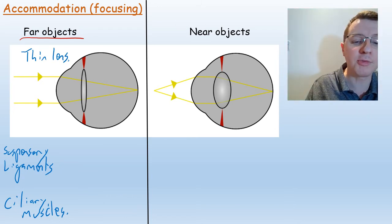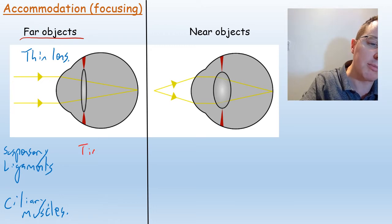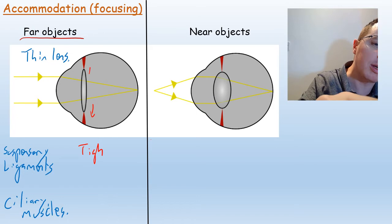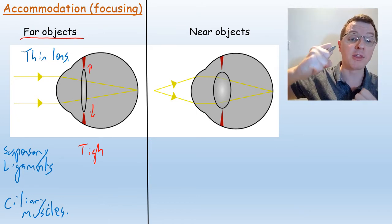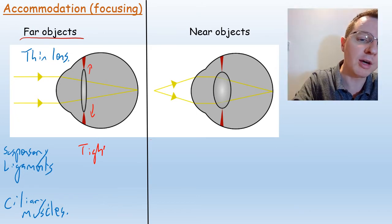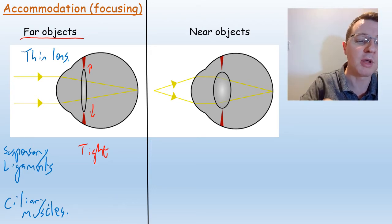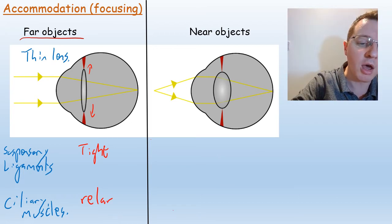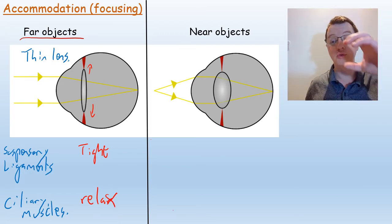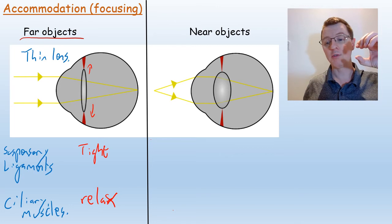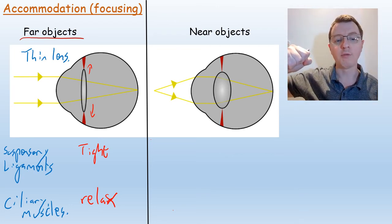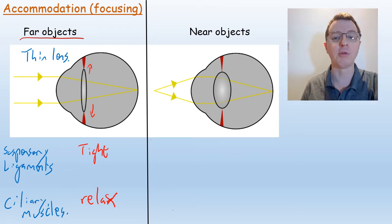The suspensory ligaments need to be very tight so that they pull and stretch the lens to make it thin. In order to have tight suspensory ligaments, the ciliary muscles need to relax. Those ciliary muscles are round muscles, so when they relax they move outward and stretch, pulling the suspensory ligaments taut as they relax.